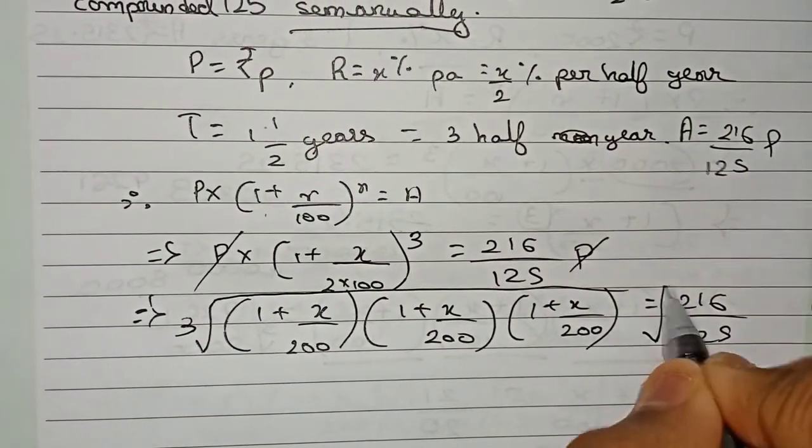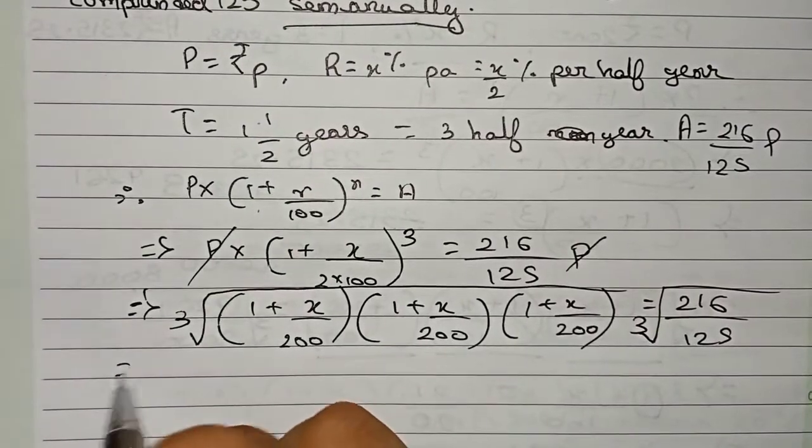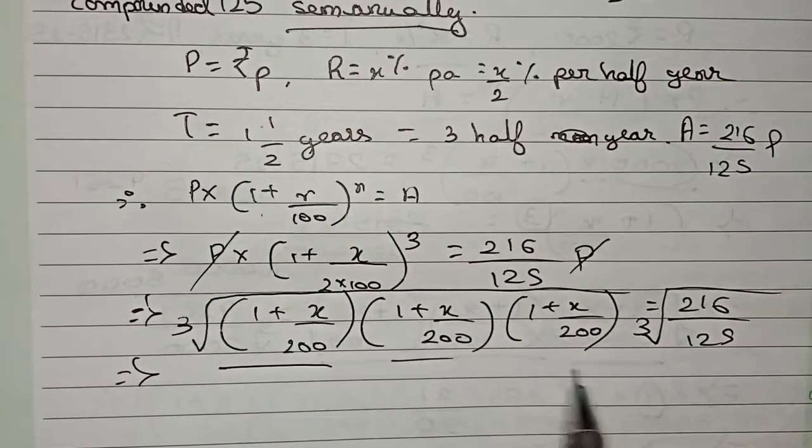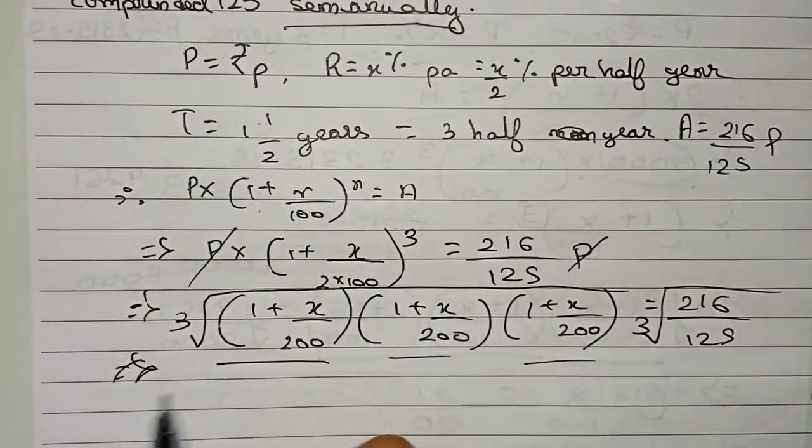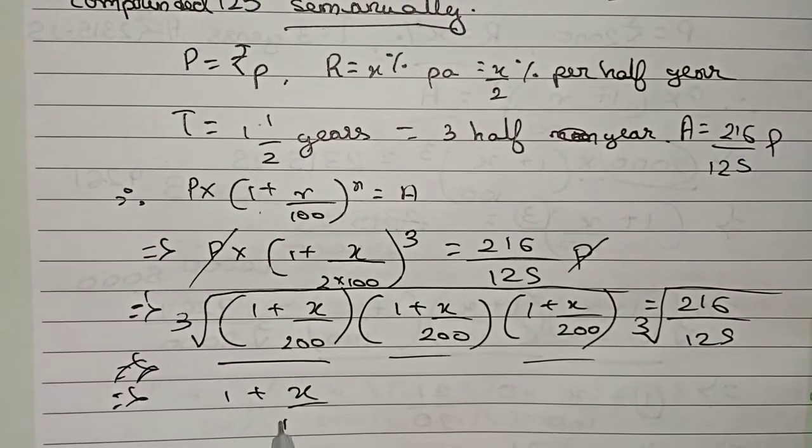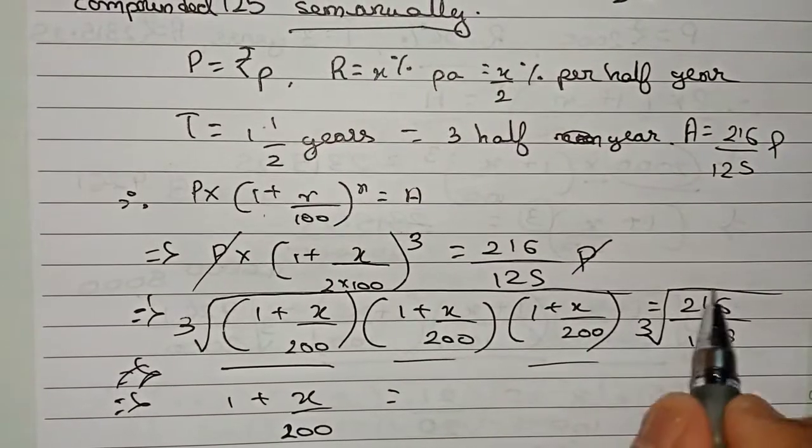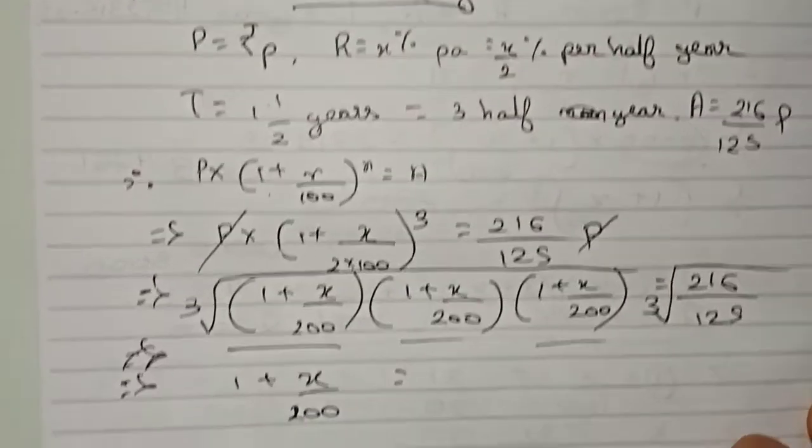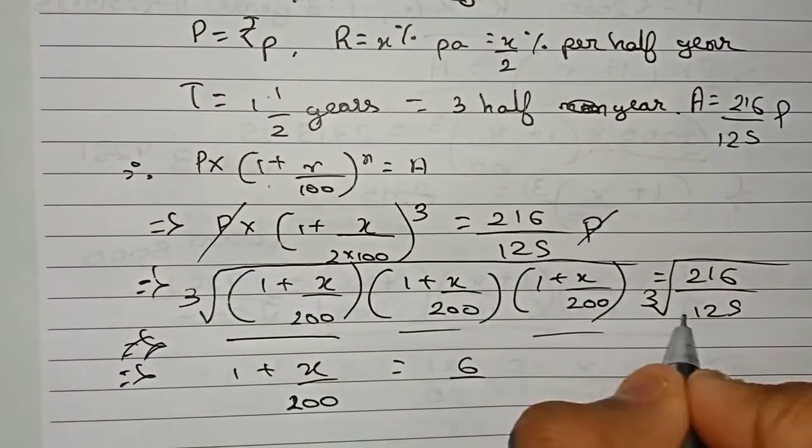This side also you have to do the cube root. Cube root means after from these three numbers, only one will be taken. So therefore one number is 1 plus x by 200, only one time we are taking. And here cube root of 216 we all know is 6, and 125 cube root is 5.